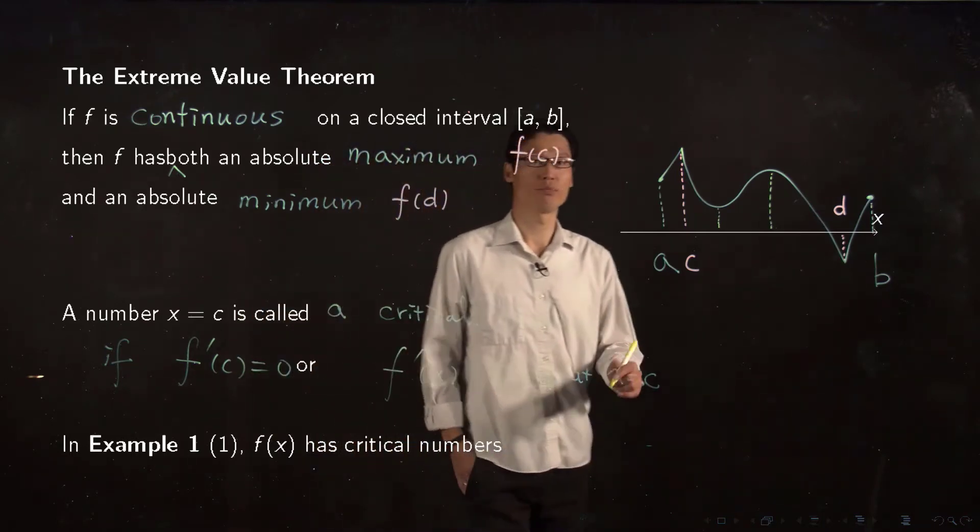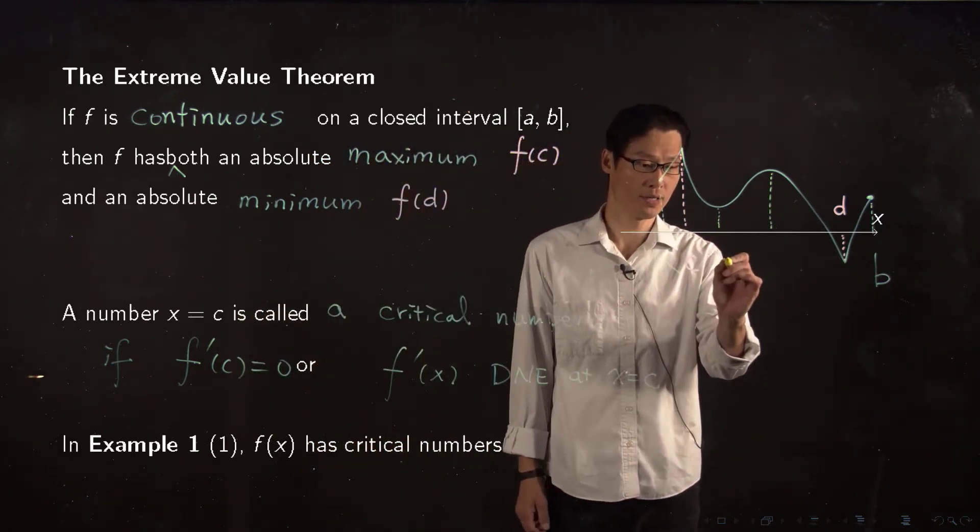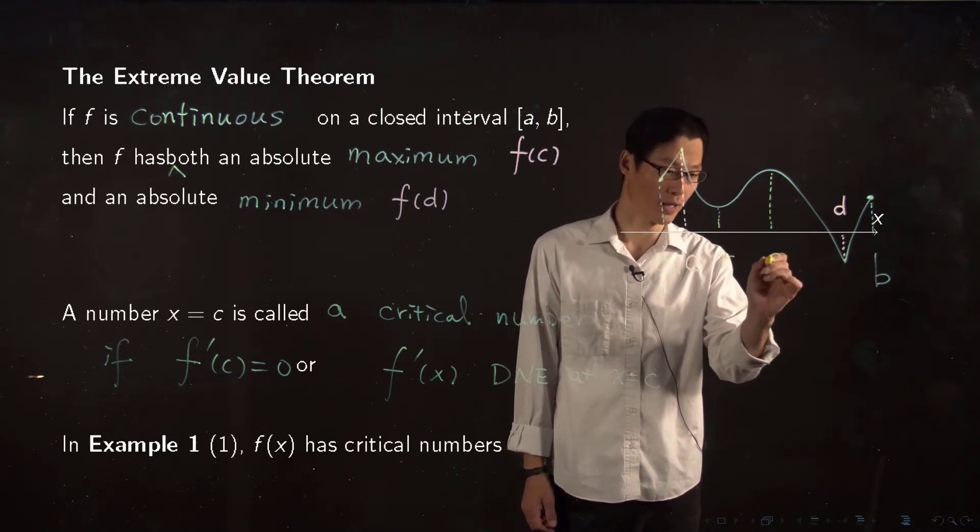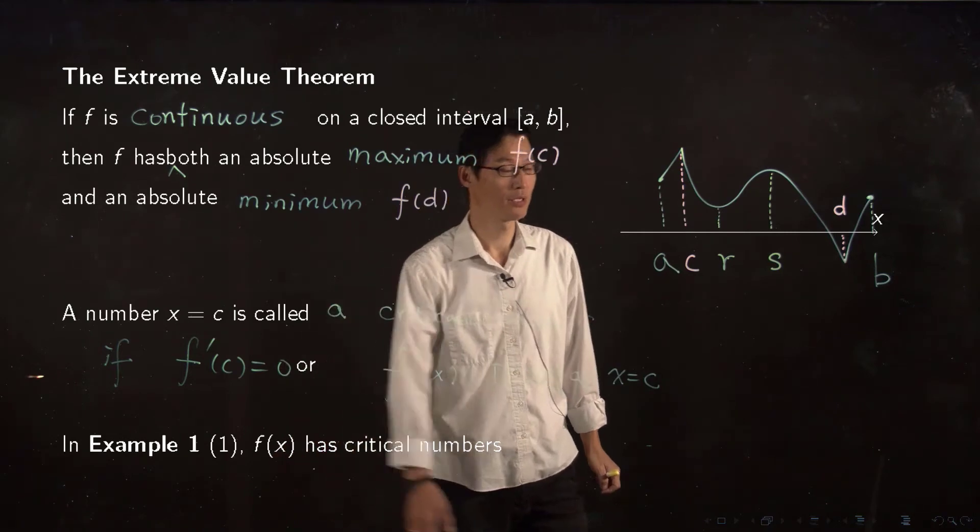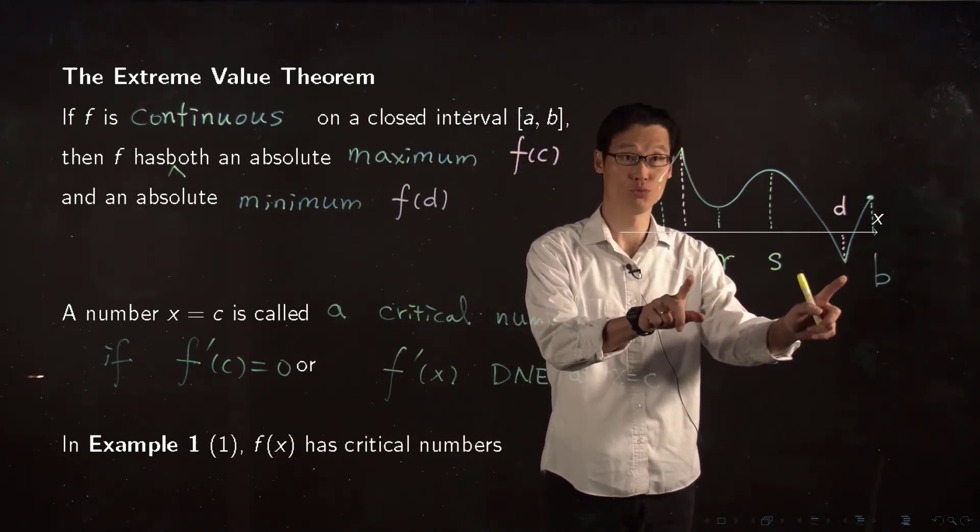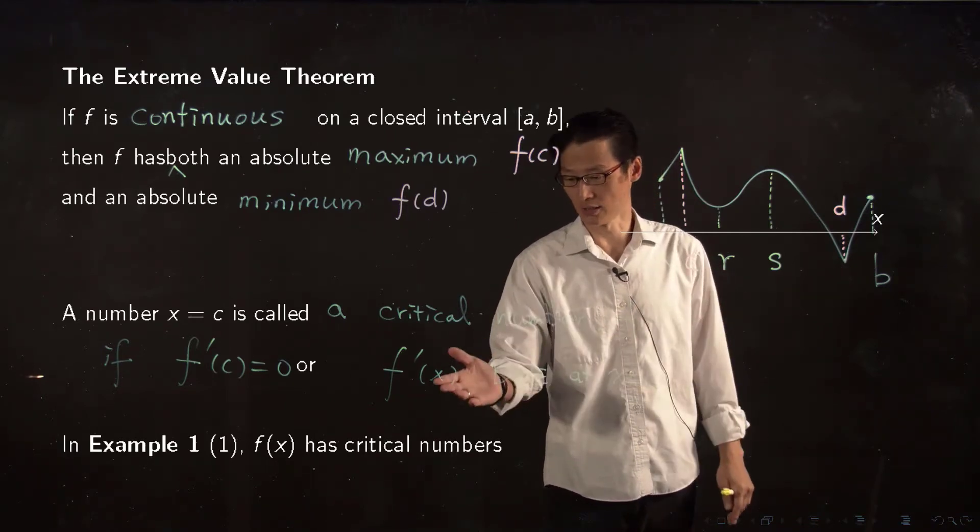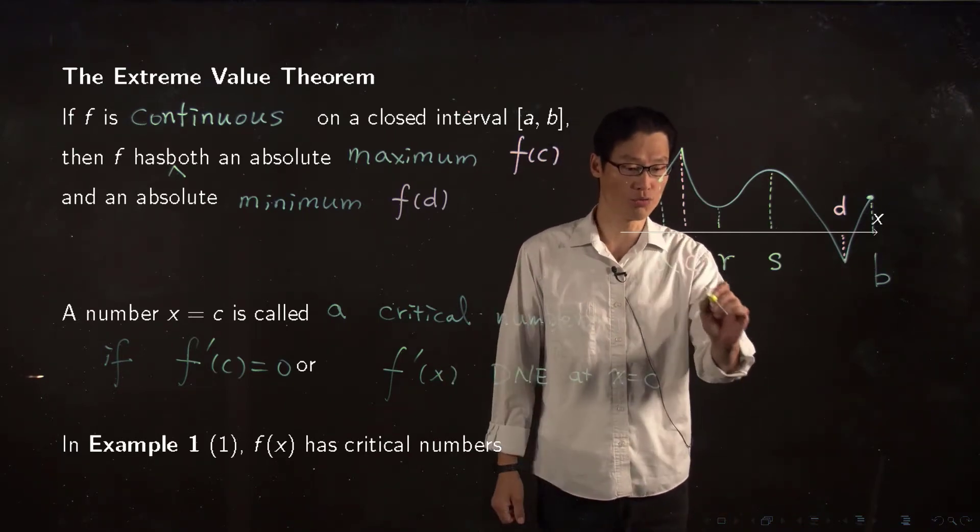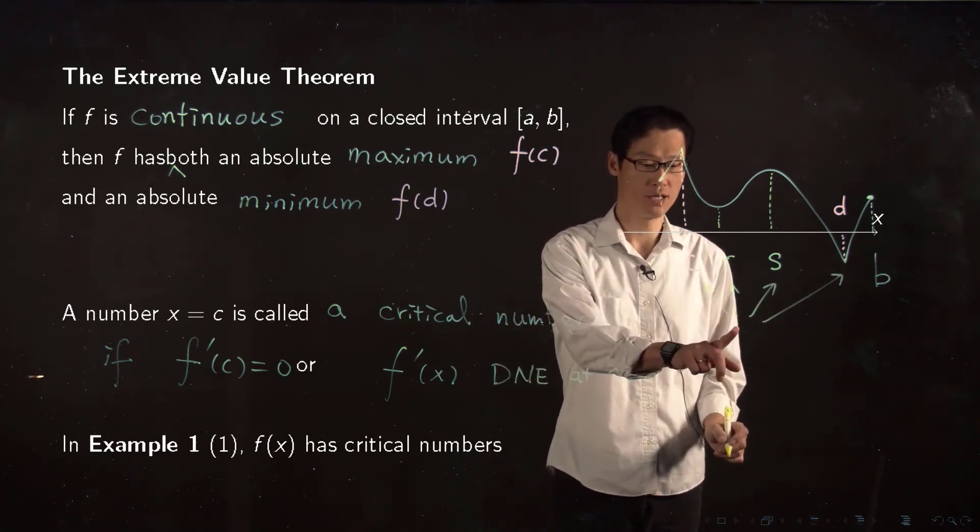So in this example, those two, say R and S, those two numbers are critical numbers. In addition to those two, we have two more numbers, C and D, where your function is not differentiable. So all four guys are critical numbers.